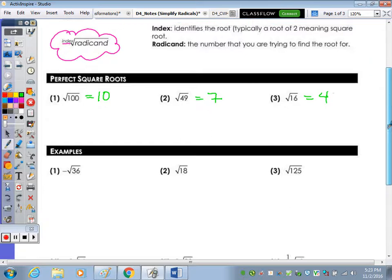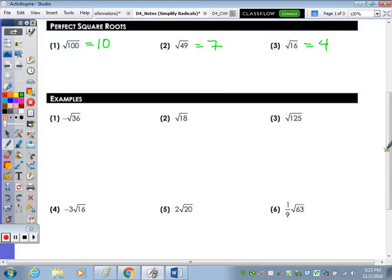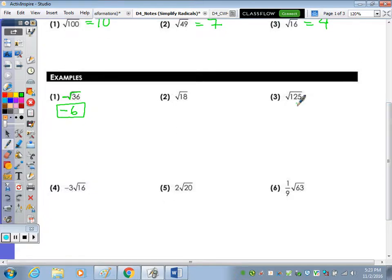Now let's take a look at the examples below that are not perfect square roots. Well, actually number 1 is. The negative out front means we're just going to take the square root of 36 and make it negative, so that would be negative 6. Another perfect square looking at the examples is 125, so if you go to the calculator, you take the square root of 125. You always want to double check on the calculator first to see if the number is a perfect square or not if it's greater than 100.